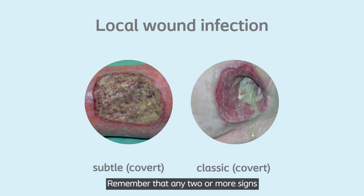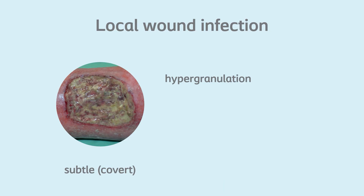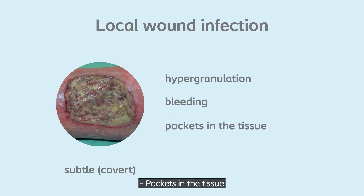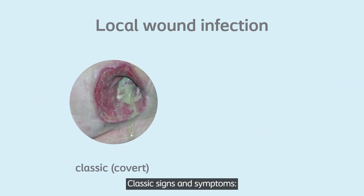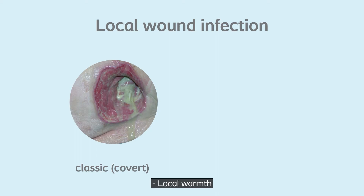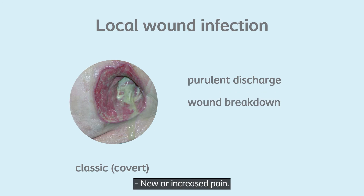Remember that any two or more signs indicate local infection. Subtle signs and symptoms include hypergranulation, bleeding, pockets in the tissue, and delayed wound healing beyond expectations. Classic signs and symptoms include erythema, local warmth, swelling, purulent discharge, wound breakdown, new or increased pain, and malodour.